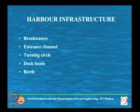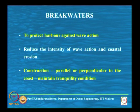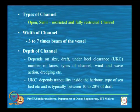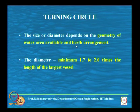Last class we discussed the infrastructure for the harbor: breakwaters, entrance channel, turning circle, dock basin, and the berth. I will be discussing certain planning aspects for the entrance channel and turning circle using the IS code. The turning circle diameter depends on the geometry of the water area available and the berth arrangement. Typically, the diameter is about 1.7 to 2 times the length of the largest vessel.